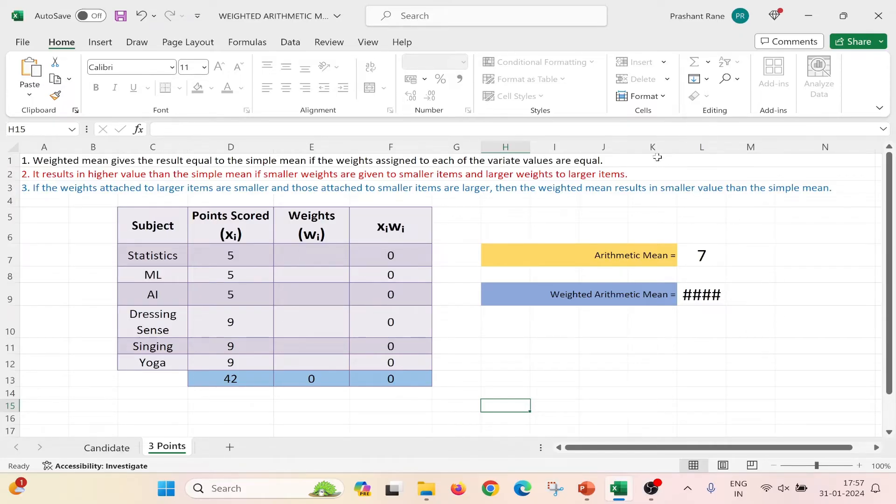The first aspect states that Weighted Mean gives the result equal to the Simple Mean if the weights assigned to each of the variate values are equal. So let us assign equal weights to each of the values. For our example, I will assign a weight of 3. Now we will see what is the Weighted Arithmetic Mean. We can see that Weighted Arithmetic Mean is 7 which is equal to the Arithmetic Mean. So we have proved the first aspect.